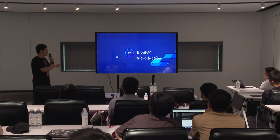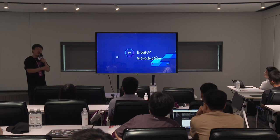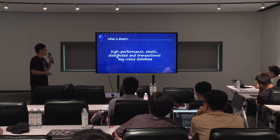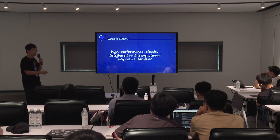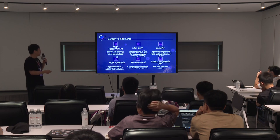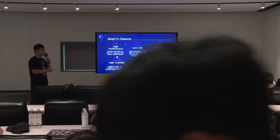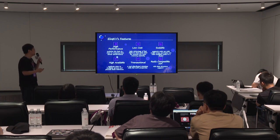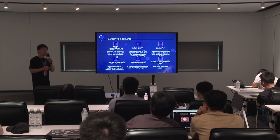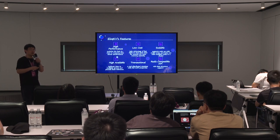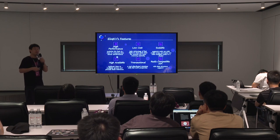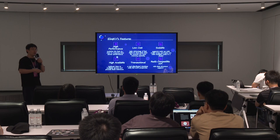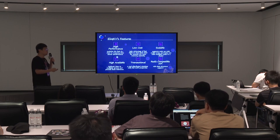Next I will give a quick introduction to LLKV and how LLKV can address the above challenges. LLKV is a high performance, elastic, distributed, and transactional key-value database. It has many good features. It has very high performance, not just for a very big cluster — even in a single node cluster, it can match the best-in-class in-memory data storage. For example, we can be as fast as Redis. And we also support multi-threading, so it can even run faster than Redis.